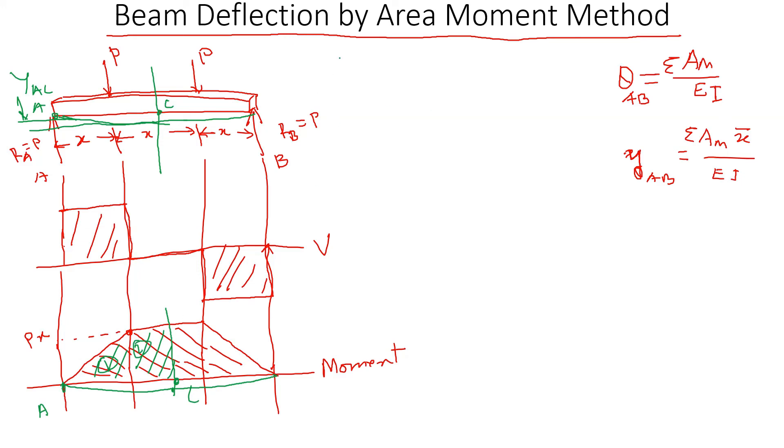To calculate theta AB, theta AB is equal to—I've got two areas, one triangle and one rectangle—so area one plus area two divided by the modulus of elasticity times the moment of inertia.